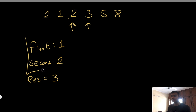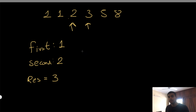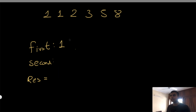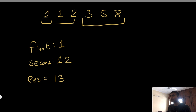But that assumed we knew the first and second numbers. Instead, we try all possible first and second number combinations. Let's say the first number is one and the second number is 12. In that case, one plus 12 equals 13. From the remaining numbers, does it start with 13? It does not — so this is not a valid combination.